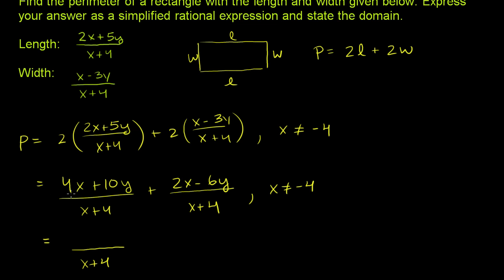We have the 4x being added to the 2x. So that is going to be equal to 6x. And then we have the 10y being added to a negative 6y, or 6y being subtracted from 10y, depending on how you want to view it. So that is plus 4y.